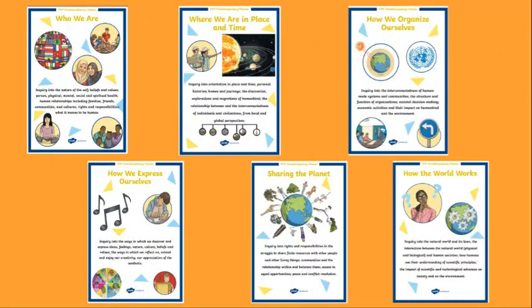What kind of things is it? We have six different themes. Each theme is kind of like a topic and it takes a period of time — about six weeks for each one. We have: who we are, where we are in place and time, how we organize ourselves, how we express ourselves, sharing the planet, and how the world works.